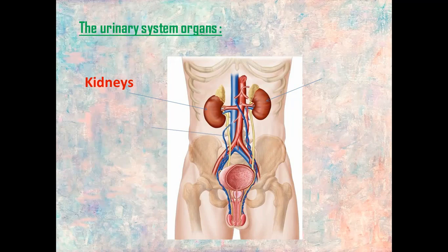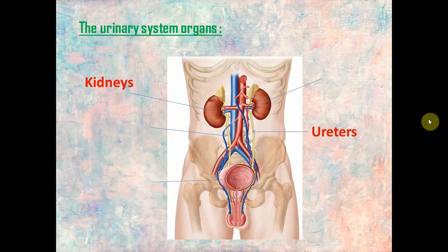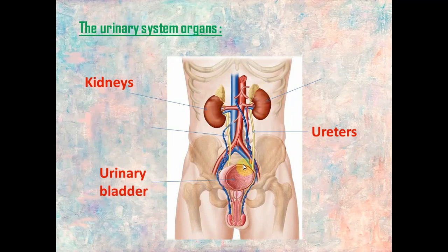Then we have two ureters. Ureters are two long and thin tubes. They are called ureters. Then we have this part which is called the urinary bladder. So the urinary system organs are: two kidneys, two ureters, and the urinary bladder.